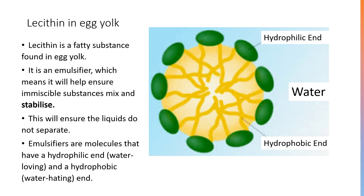Lecithin is a fatty substance found in egg yolk. It acts as an emulsifier, which means it helps substances such as oil and water to mix together and to stay mixed, ensuring that the liquids do not separate into layers.